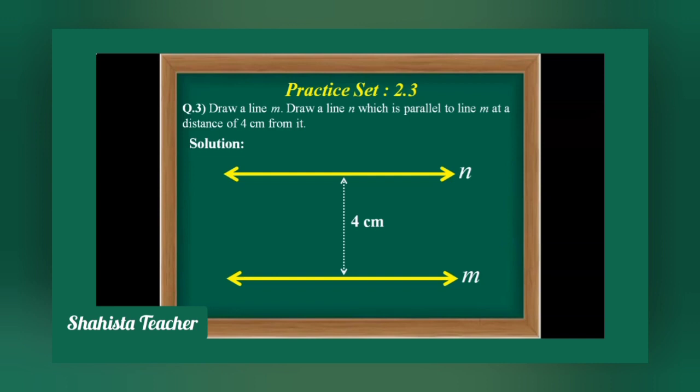We have completed Practice Set 2.3 and solved all three questions — question number one, question number two, and question number three. We have also completed chapter two on parallel lines and transversals. In this lesson we learned about parallel lines, transversals, corresponding angles, interior angles, alternate angles, and the properties of corresponding angles, interior alternate angles, exterior alternate angles, and vertically opposite angles.